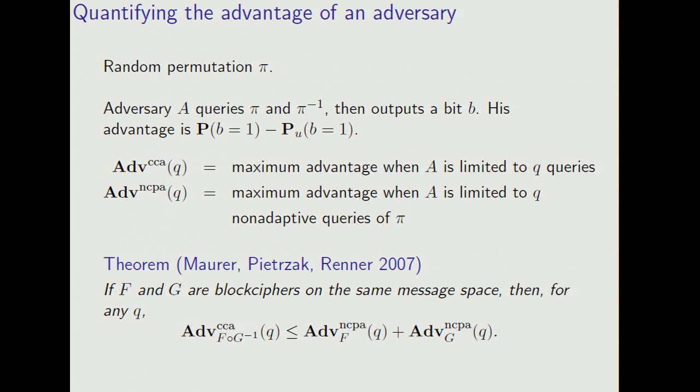Well, we're going to use a nice theorem of Maurer, Pietrzak, and Renner, which says that if you have a cipher with good NCPA advantage, if you run that, and then you run an independent copy of the inverse, then the result has good CCA advantage.